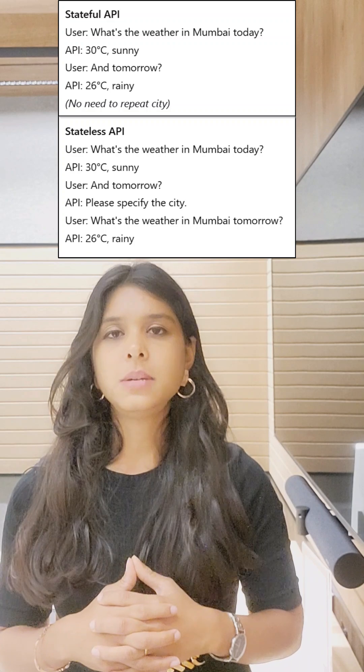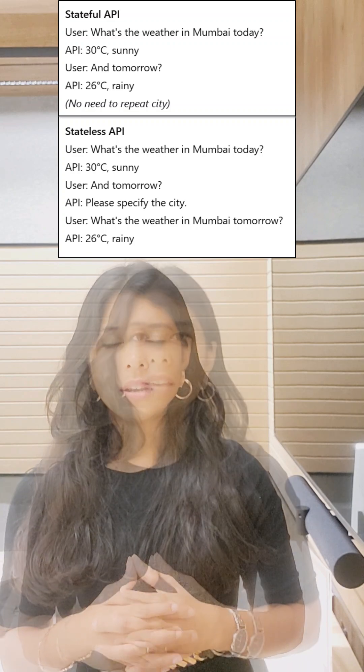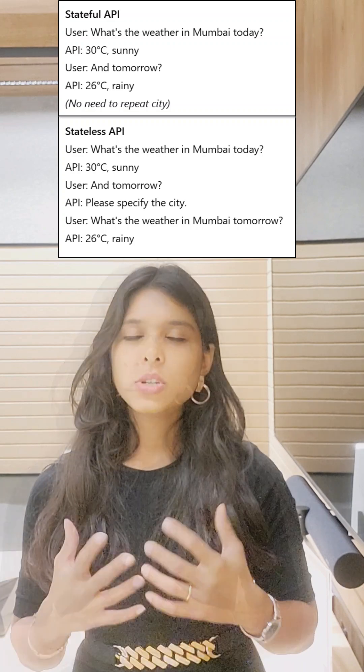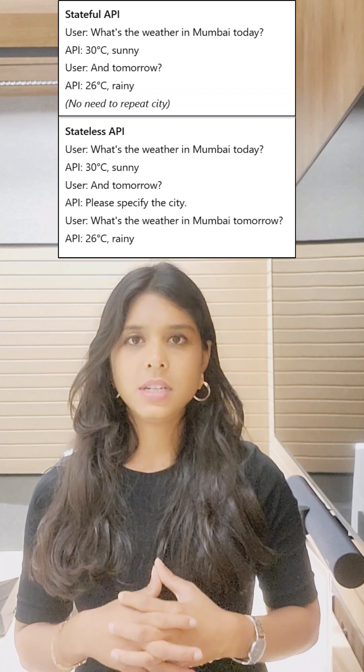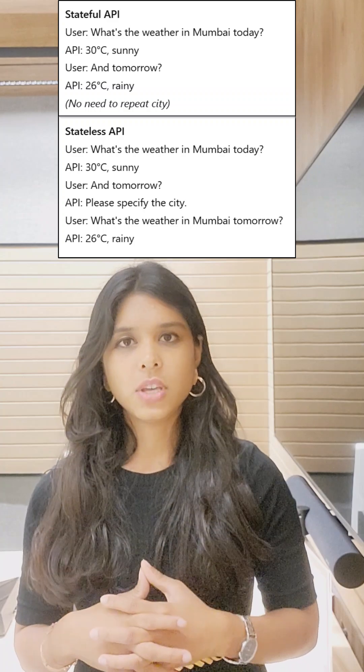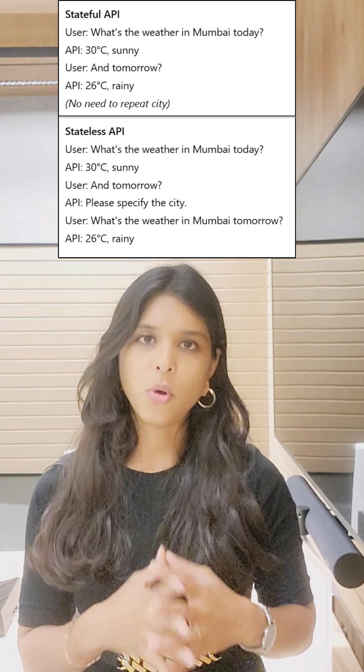But in the case of a stateless API, for the same follow-up prompt, it might answer: I don't know the full context, please specify the city for which you are looking for weather for tomorrow. That is the difference between a stateful API and a stateless API.